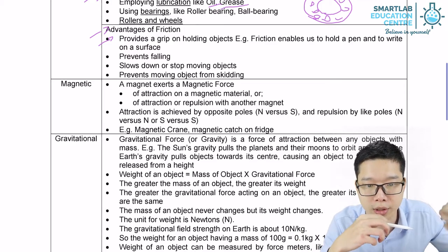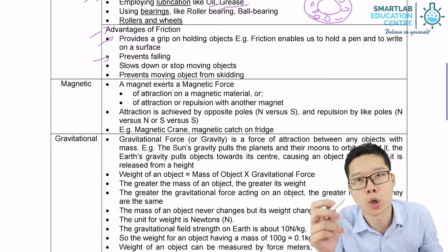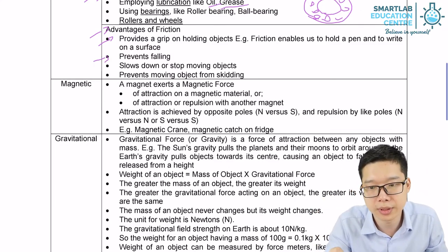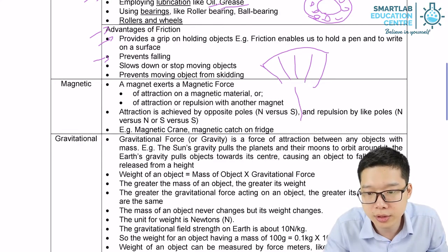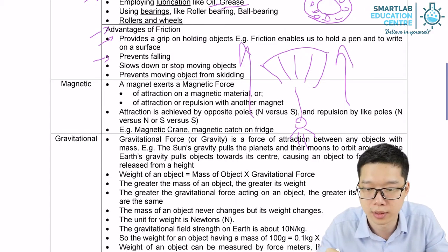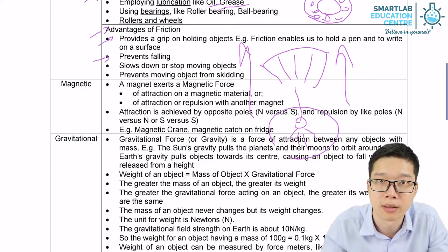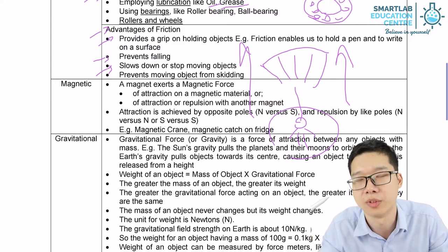So that's one of the advantage of friction force, which can help you to hold and grip object. And second one, it prevents falling. For example, if we have a parachute, the frictional force of the air to the parachute, it stops the man from falling down.